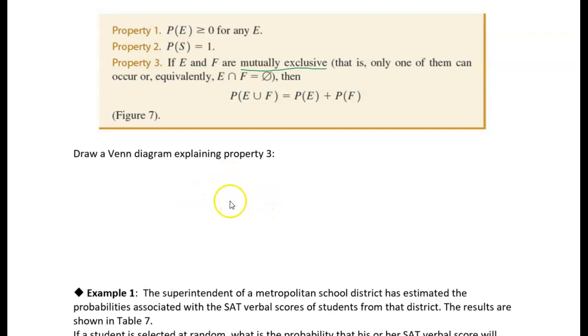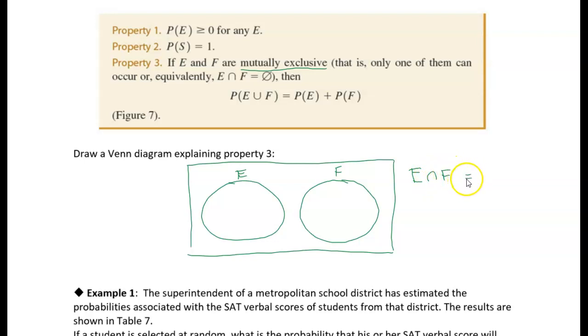So if we wanted to draw an event diagram of that, here's e, event e, and here's event f. So they don't intersect, they have no elements in common. And here's our sample space. So that's what mutually exclusive looks like. We can test if two events are mutually exclusive if their intersection is the empty set, which means those two events cannot happen simultaneously.